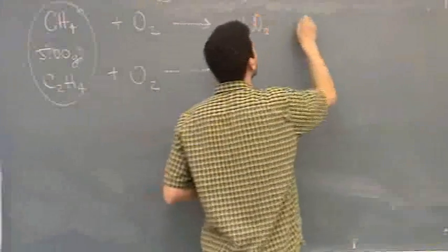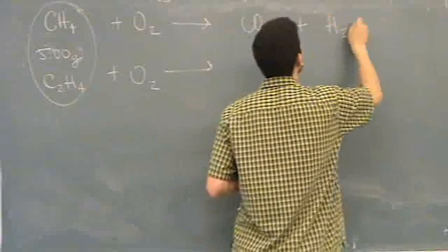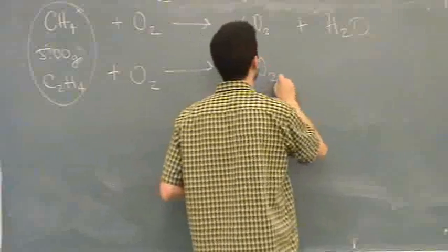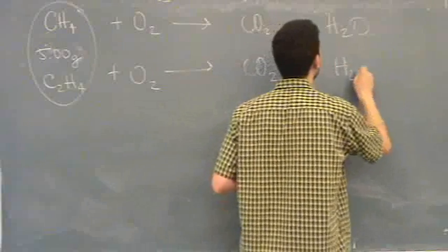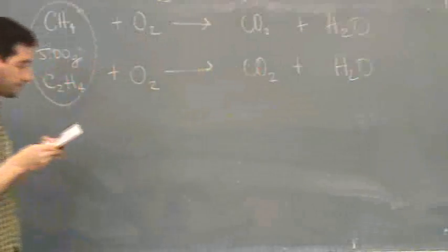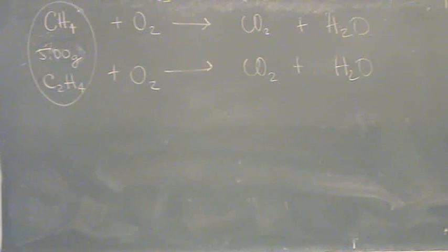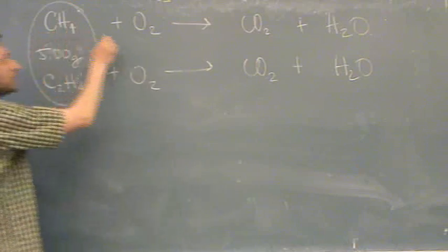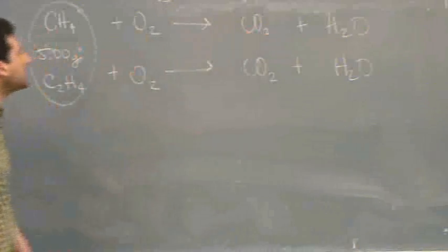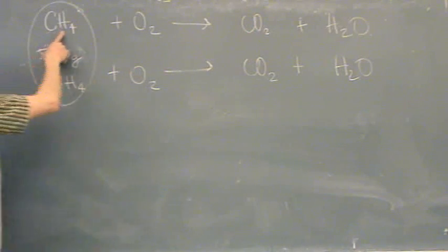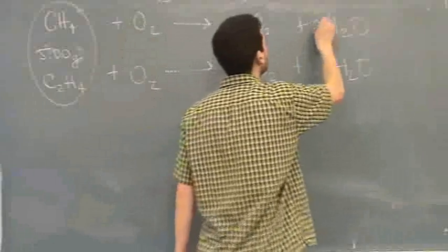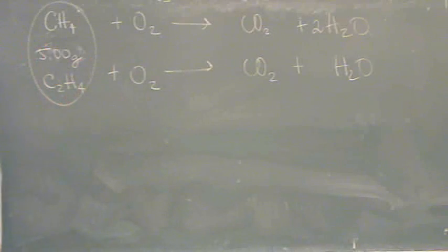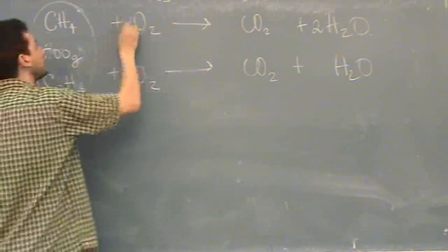Forms CO2 and water. We should balance this, and then we'll kind of go on with the question. One carbon, so there's one carbon here, that's good. Four hydrogens, so I should have four hydrogens there. That makes on the right-hand side, one, two, three, four oxygen, so I'll put a two here.